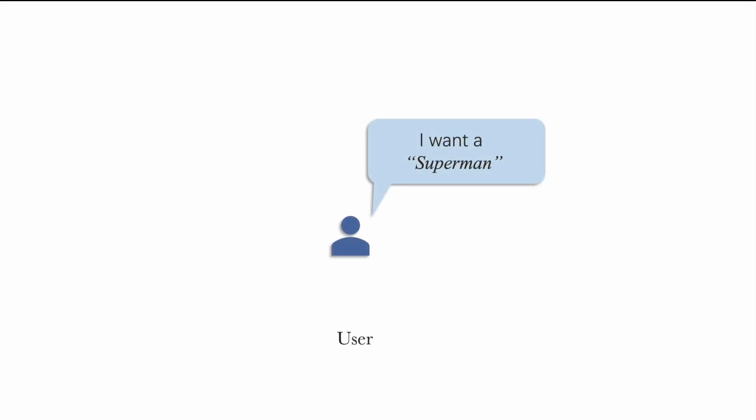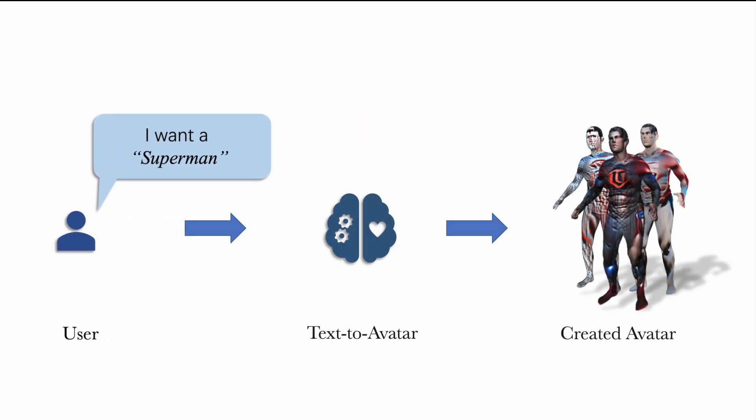Human avatars are widely used in VR and AR applications. However, the creation of human avatars is still a tedious and time-consuming process, which requires the expertise of artists. To address this challenge, recent works have proposed to use text prompts to generate human avatars. Users can specify the desired avatar by providing a text description, and the algorithm generates the avatar accordingly.